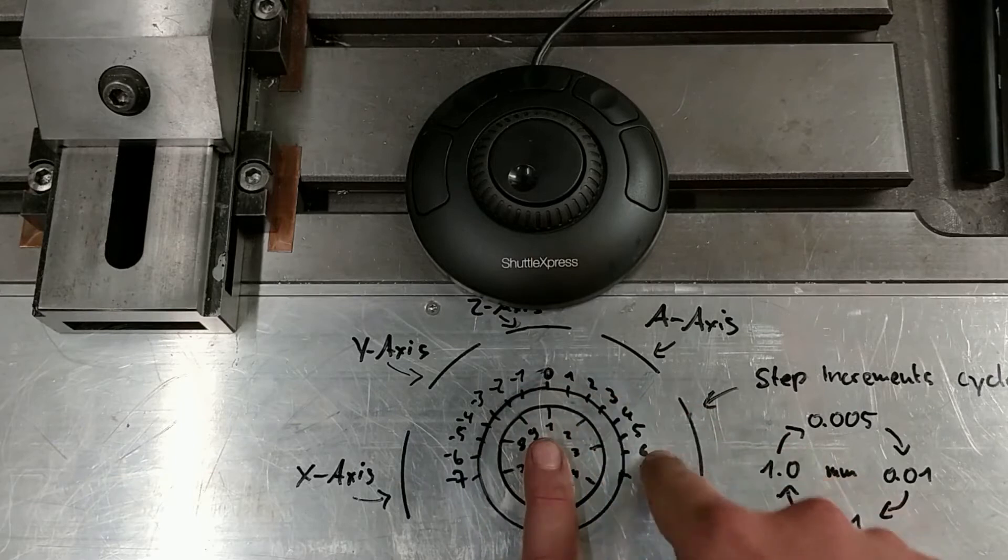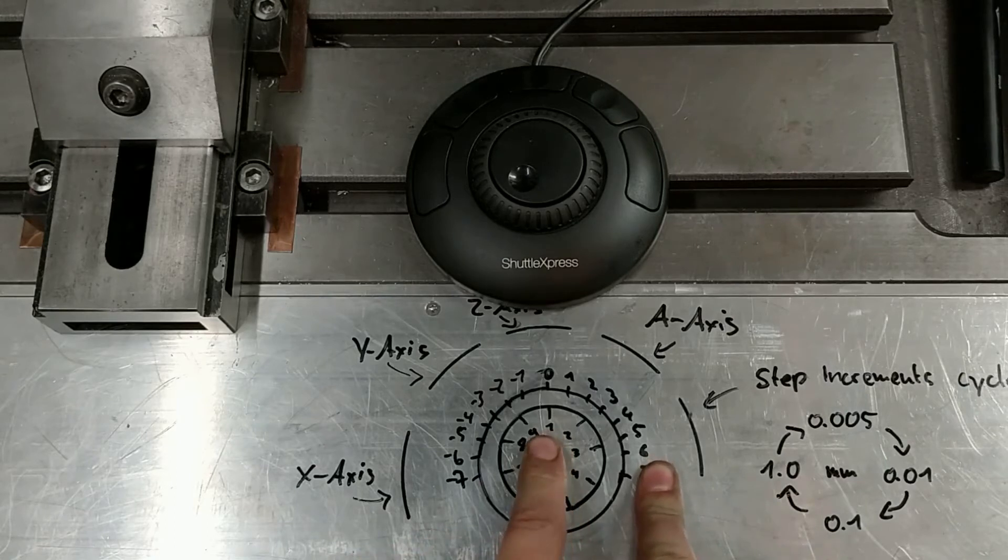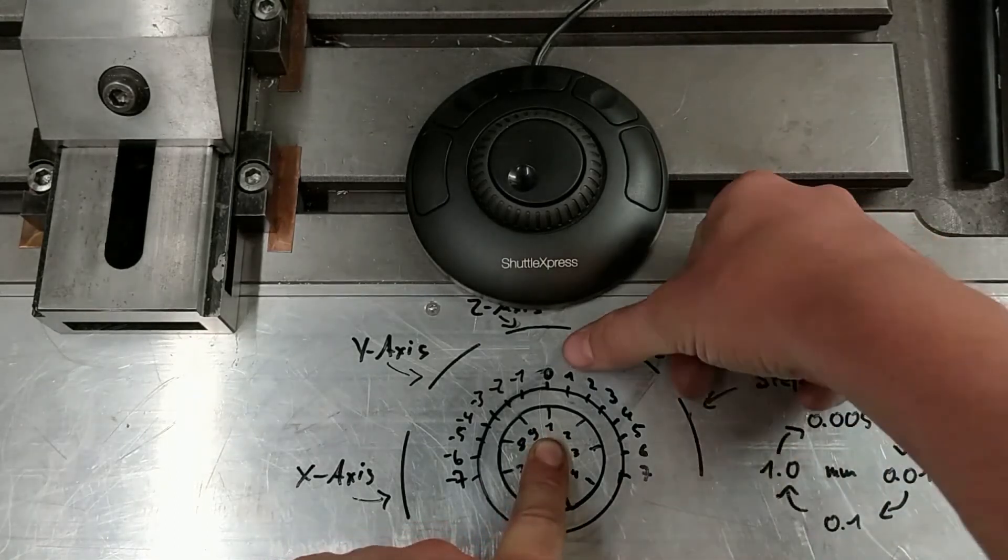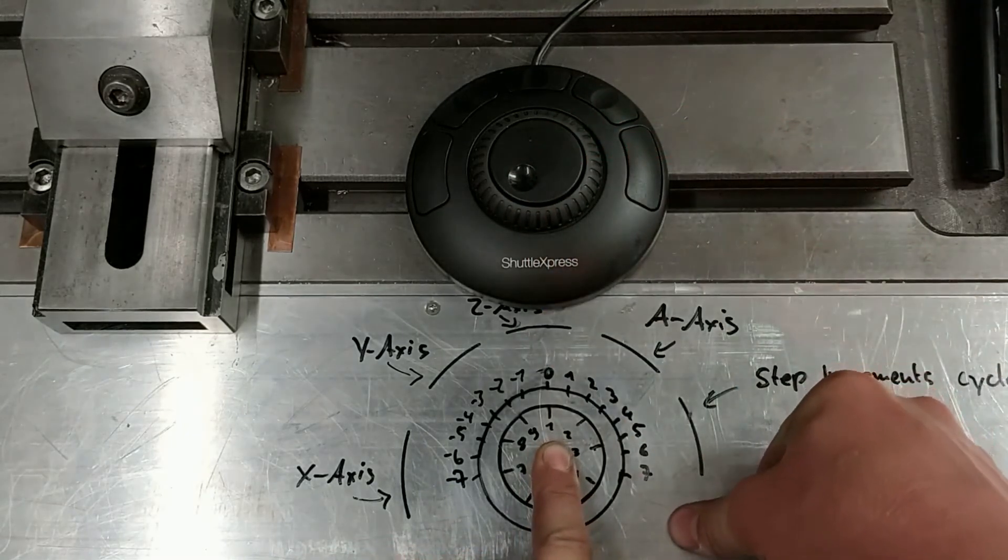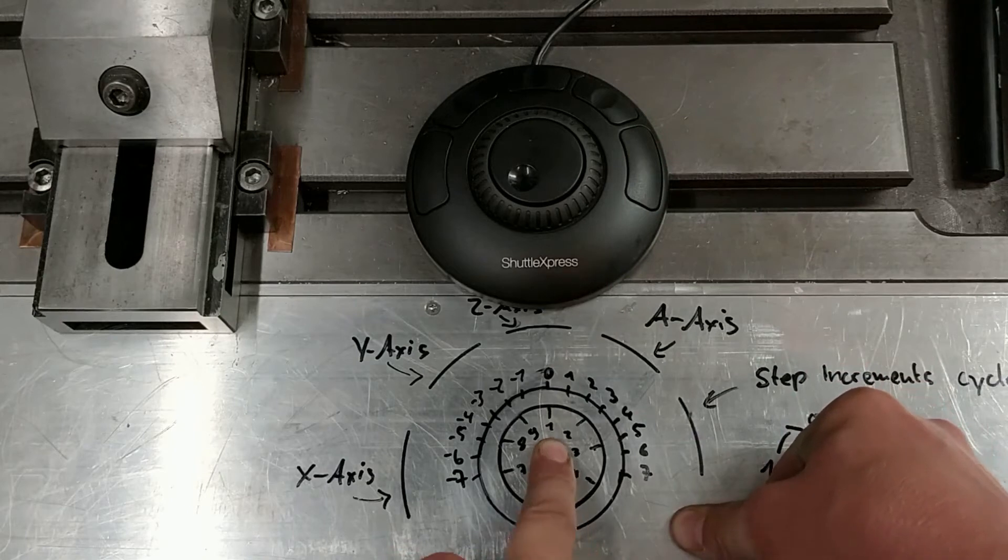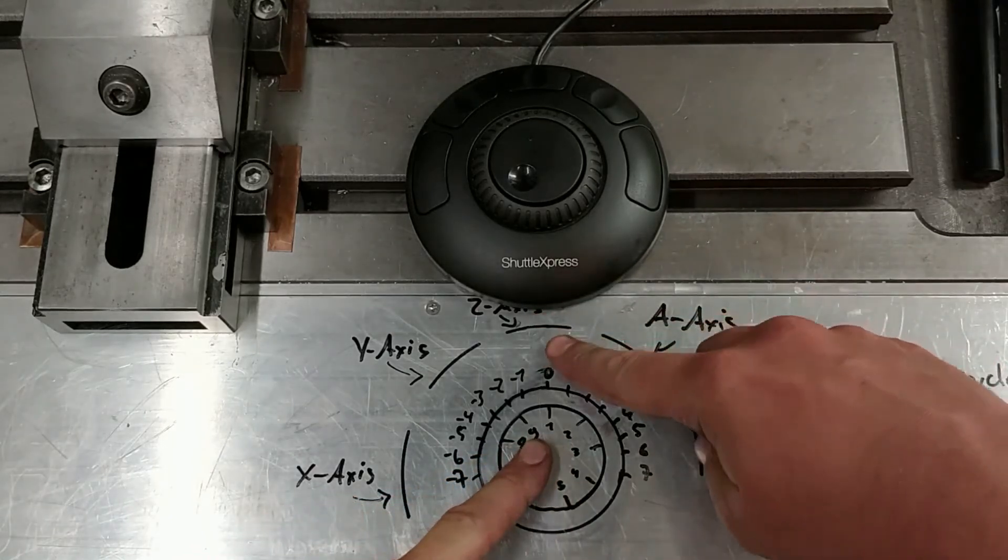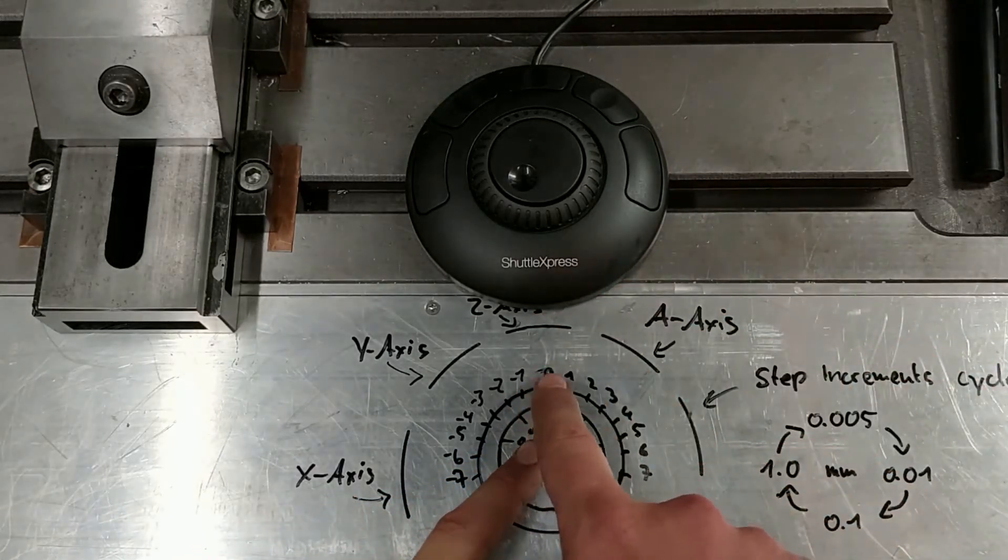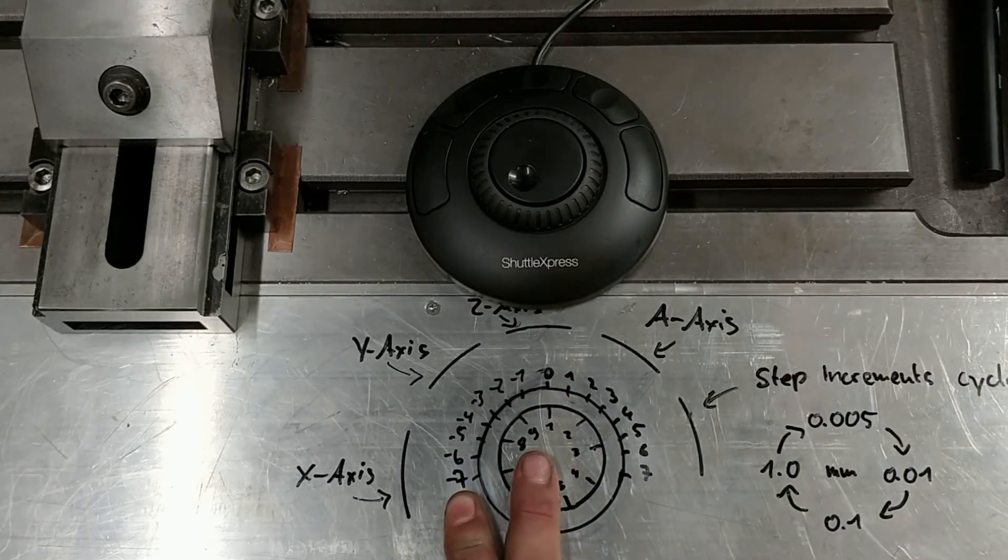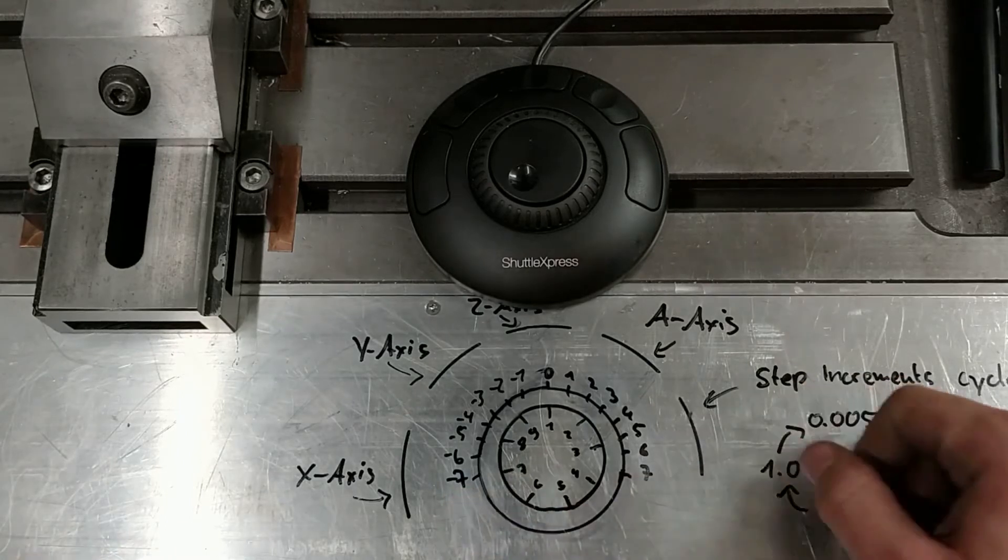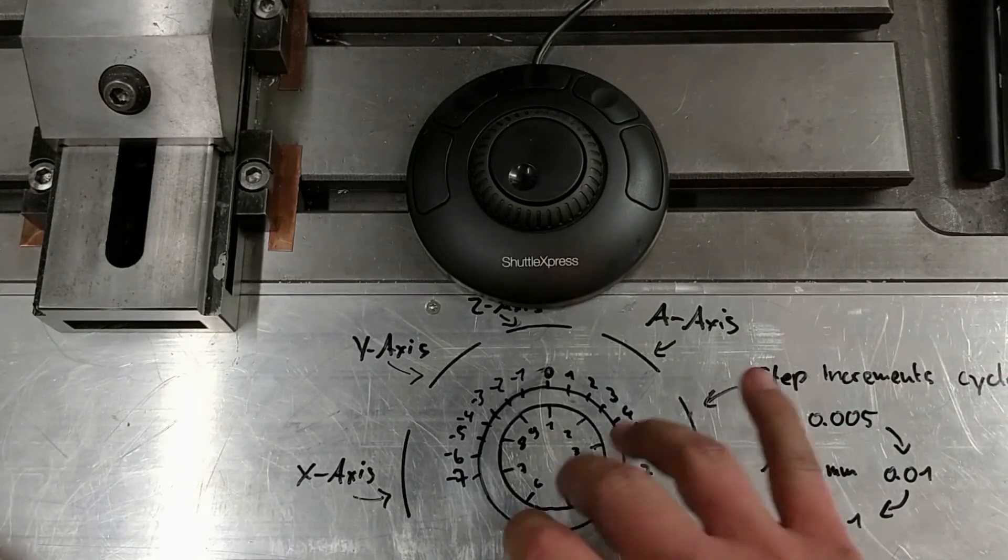And these different steps are exposed to LinuxCNC in two ways. We can use it as a floating point number, so it's from 0 to 1. And the other way is as integer. And it's a signed integer. So we have 0, 1, 2, up to 7. And on the other hand, up to minus 7.